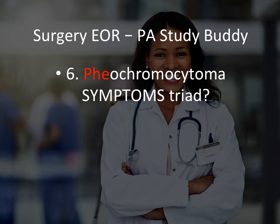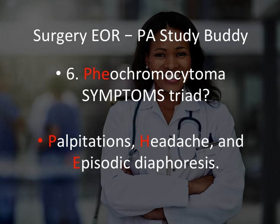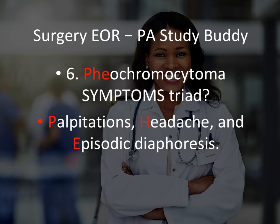Question number six: pheochromocytoma symptoms triad. When it comes to pheochromocytoma, just remember the first three letters: P-H-E. Those are the symptoms — palpitations, headaches, and episodic diaphoresis.